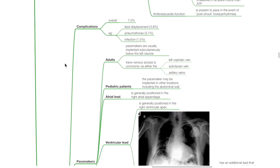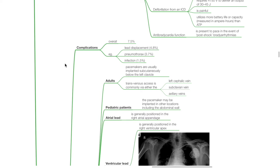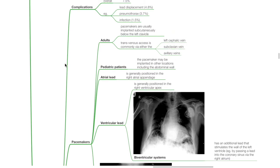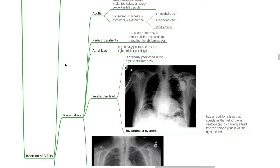Insertion of CIEDs: overall complication rate is 7.5%; examples include lead displacement and infection at 1.5%. In adults, pacemakers are usually implanted subcutaneously below the left clavicle. Transvenous access is commonly via either the left cephalic vein, subclavian vein, or axillary veins. In pediatric patients, the pacemaker may be implanted in other locations including the abdominal wall. The atrial lead is generally positioned in the right atrial appendage; the ventricular lead is generally positioned in the right ventricular apex. For biventricular systems, there is an additional lead that stimulates the wall of the left ventricle, for example by passing a lead into the coronary sinus via the right atrium.